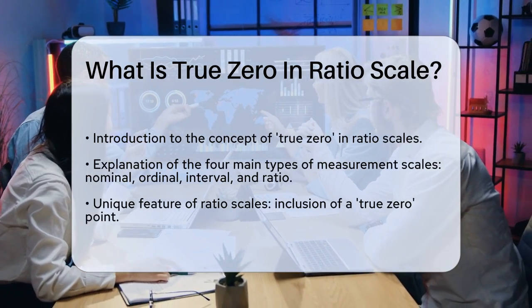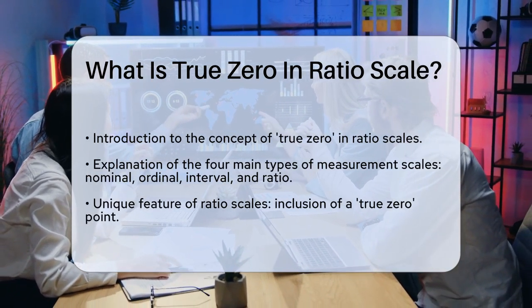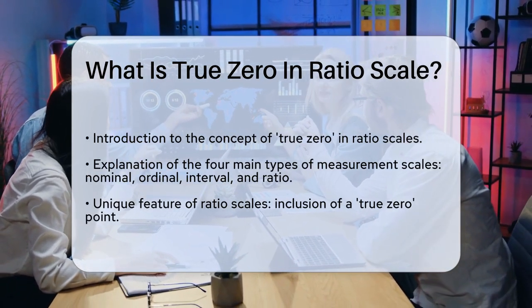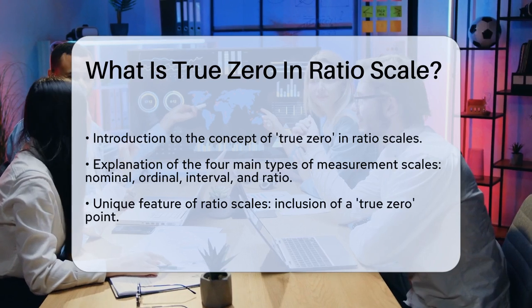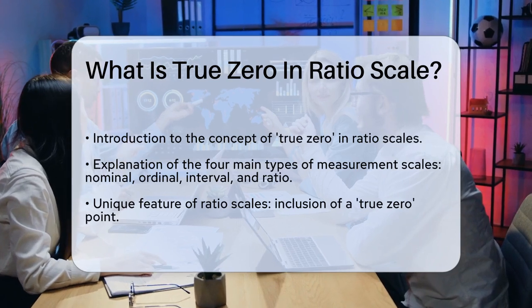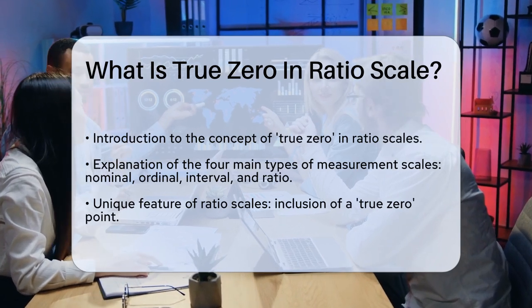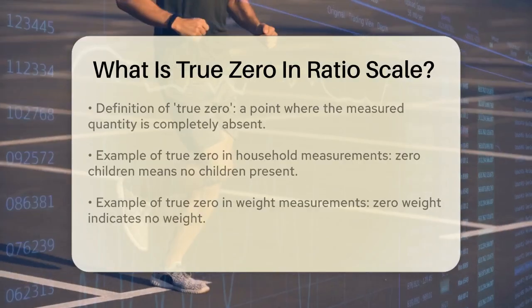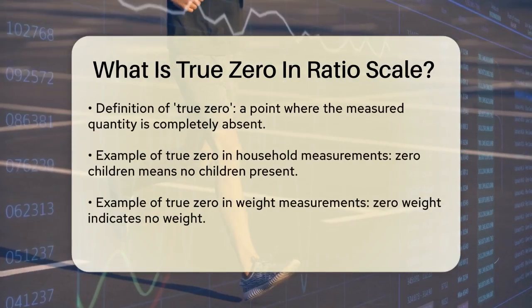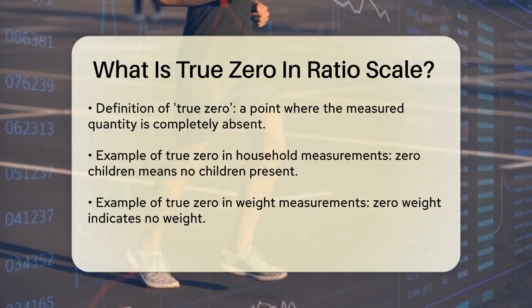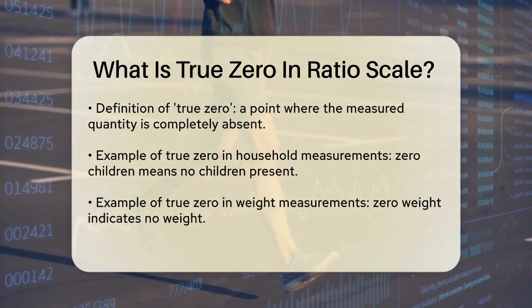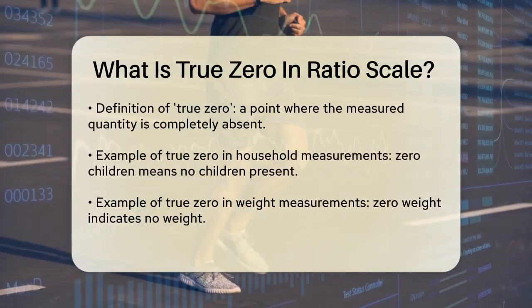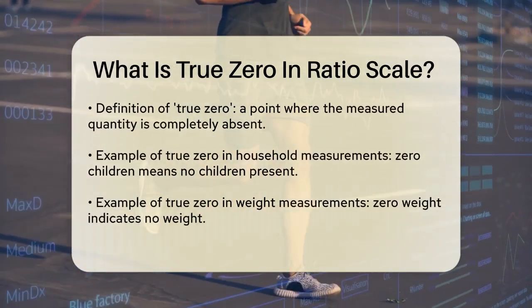So what does true zero mean? Essentially, it's a point on the scale where the quantity being measured is completely absent. For example, if you're measuring the number of children in a household, a true zero would mean there are no children at all.